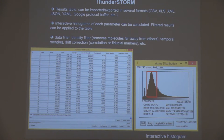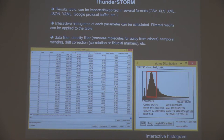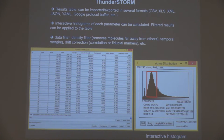This is the results table. The data can be imported or exported in many different formats. We have interactive histograms of each parameter — the number of molecules, which frame they were in, the number of detected photons, and so on. You can plot a histogram of that, draw a box, and click to apply a region of interest to filter. It automatically chooses that range of values and removes all molecules outside that range.